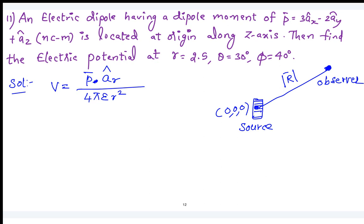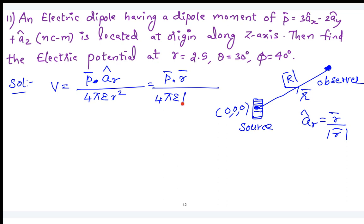First convert the observer point from spherical to rectangular coordinates. X equals R sin(theta) cos(phi), Y equals R sin(theta) sin(phi), Z equals R cos(theta). Substitute the values: x2, y2, z2 will be the rectangular coordinates. The source is at the origin so x1, y1, z1 are all zero. Then vector R-bar equals x2 ax + y2 ay + z2 az.